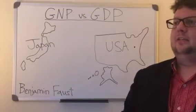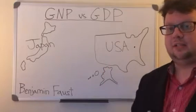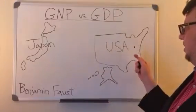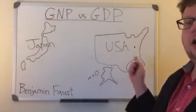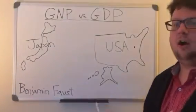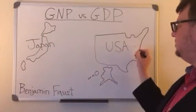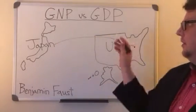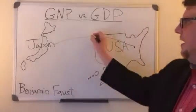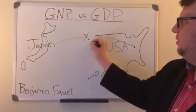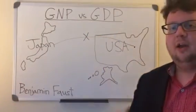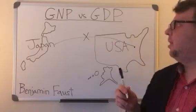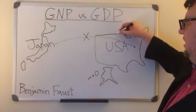That car is made and sold in the United States. Under GNP — gross national product — that Toyota plant and the value of that car is going to be added to Japan's GNP. Now if we're talking gross domestic product, ownership doesn't matter as much; that Toyota car being made in West Virginia and sold in the United States would be part of the United States' GDP.